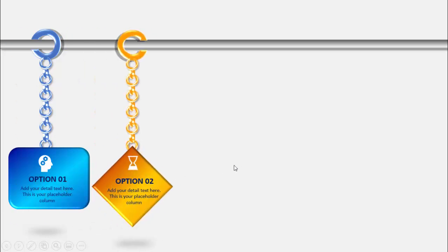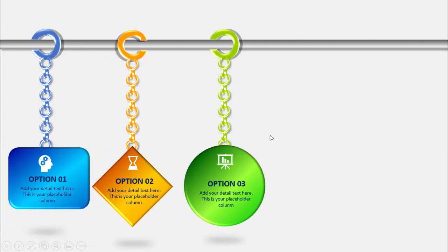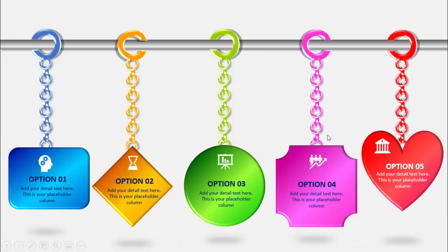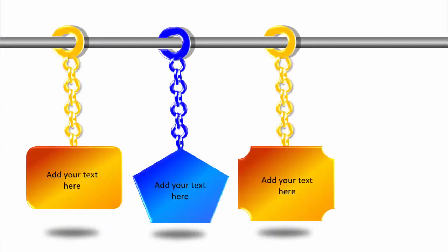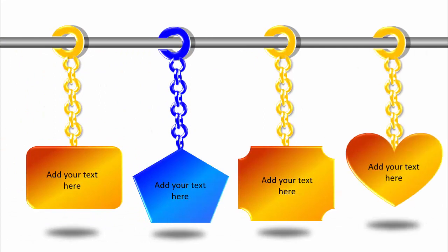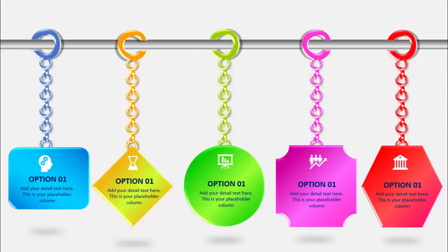The first option has a kind of 3D chain with an icon and some detail text. On the next click it shows a different shape with different colors, then the third shape, the fourth, and the fifth. You can also make it four options with different colors and shapes, and you can change any shape as per your requirement.